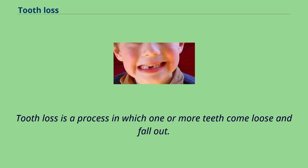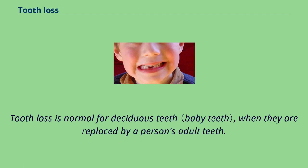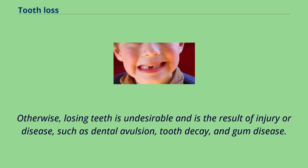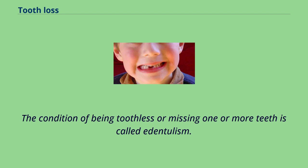Tooth loss is a process in which one or more teeth come loose and fall out. Tooth loss is normal for deciduous teeth, when they are replaced by a person's adult teeth. Otherwise, losing teeth is undesirable and is the result of injury or disease, such as dental avulsion, tooth decay, and gum disease. The condition of being toothless or missing one or more teeth is called edentulism.